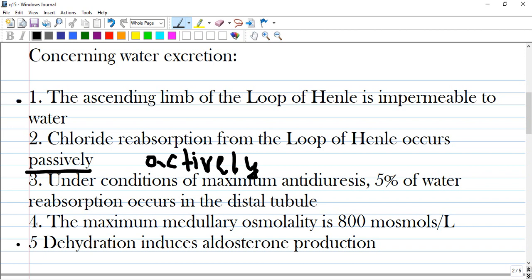Under conditions of maximum antidiuresis, 5% of water reabsorption occurs in the distal tubule. You can see words like maximum and five percent. Maximum means a lot of water is reabsorbed at distal tubule together with sodium. And it is wrong.